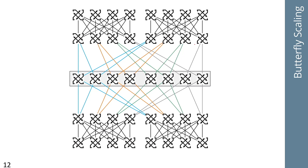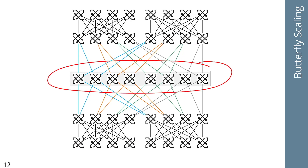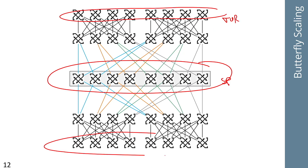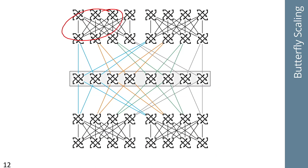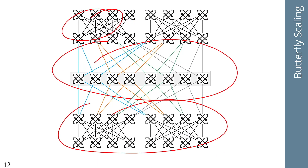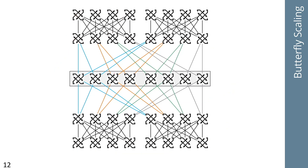Let's continue talking about scaling spine and leaf fabrics by talking about the butterfly fabric. The butterfly fabric is very similar to a clove fabric. Looking at the butterfly fabric again, it is wired like this — this is my spine, these are my top of rack switches, both at the top and bottom of the network diagram, making it easier to see the fabric and its interconnections.